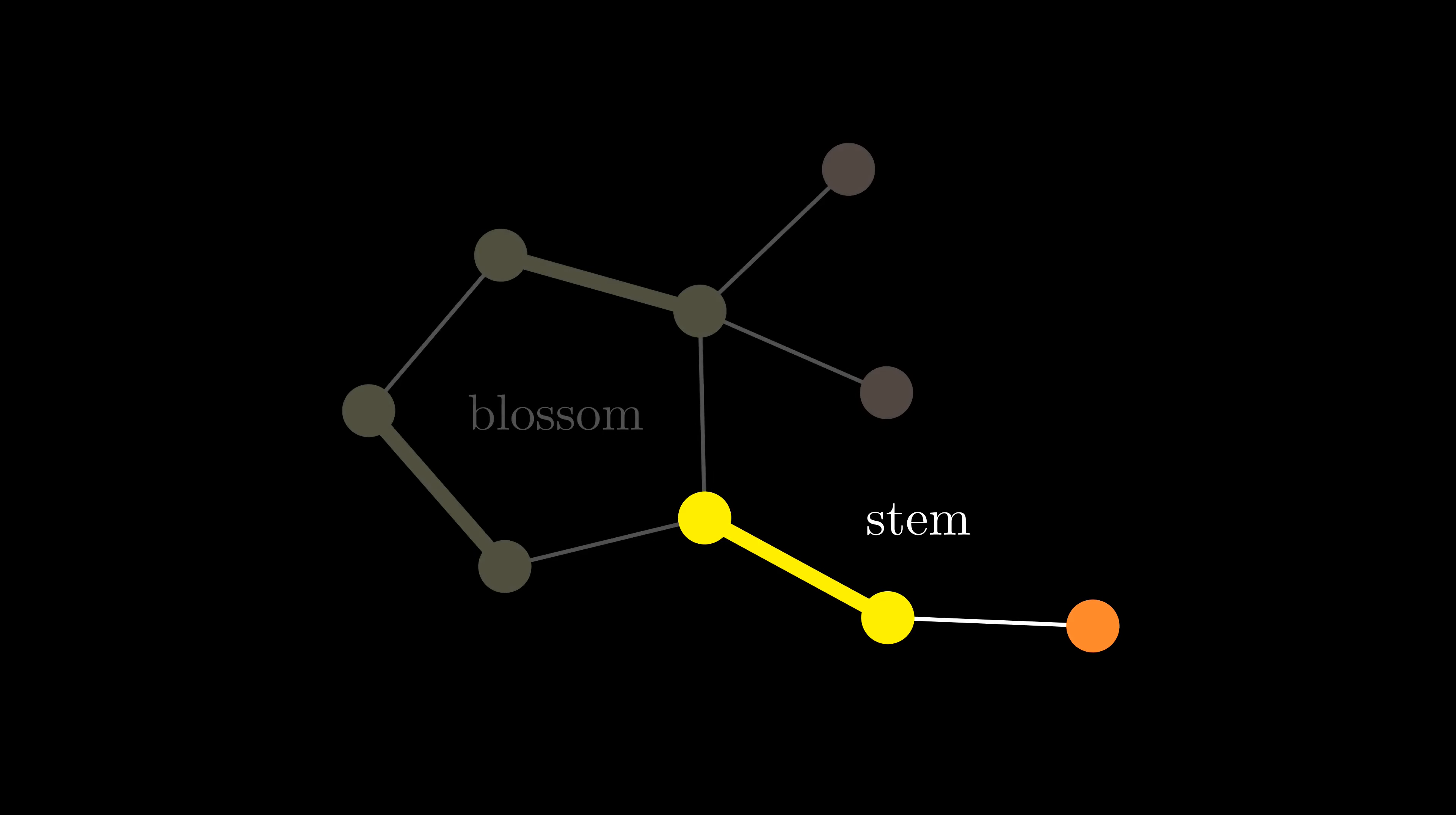To fix the problem, we'll avoid it. When we come from the stem into the blossom, we'll do the following. First, we'll contract the blossom into a single vertex. Second, we'll find an augmenting path in this new graph.